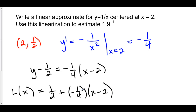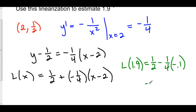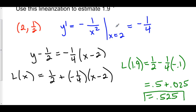Now we can use this linear approximation to approximate 1.9 to the negative 1. Let's plug in 1.9 into L of x. So here we have L of 1.9 is equal to 1 half minus 1 fourth times 1.9 minus 2, which is negative 0.1. Negative 1 fourth is approximately negative 0.25 times negative 0.1 is positive 0.025. So 0.5 plus 0.025 is 0.525. We have estimated 1 over 1.9 as 0.525.